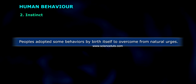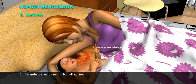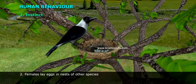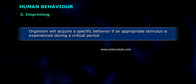Instinct: people adopt some behaviors by birth itself to overcome natural urges. Example one — female parents caring for offspring. Example two — females lay eggs in nests of other species.